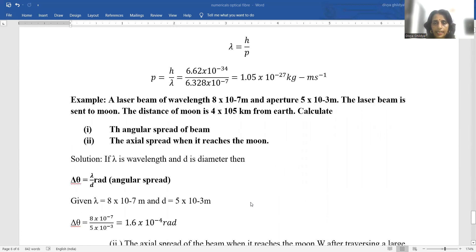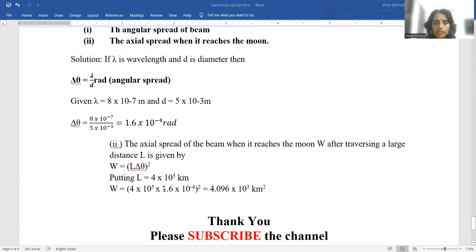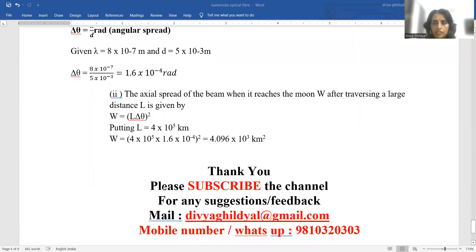A laser beam of wavelength 8 into 10 to the power minus 7 meter and aperture 5 into 10 to the power minus 3 meter is sent to moon. The distance of moon is 4 into 10 to the power 5 kilometer from earth. Calculate the angular spread of beam and the axial spread when it reaches the moon. If lambda is wavelength and d is diameter, then angular spread is given by lambda upon d. Lambda equals 8 into 10 to the power minus 7 meter and d is 5 into 10 to the power minus 3 meter. Putting these numerical values I get my angular spread. The axial spread of beam when it reaches the moon after traversing a large distance is given by W equals L into del theta whole square. Putting L equal to 4 into 10 to the power 5 kilometer we get the value for W.